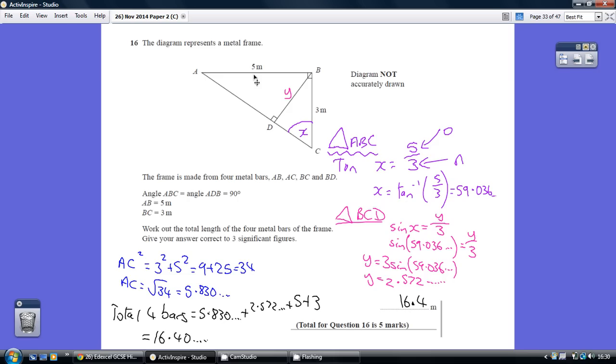If we look at this right-hand triangle ABC, then AC is the hypotenuse and we know the two shorter sides. So we can work out AC using Pythagoras with AC squared being 3 squared plus 5 squared, which is 9 plus 25, which is 34.